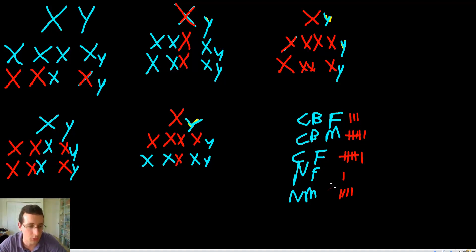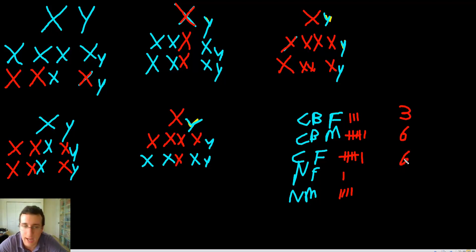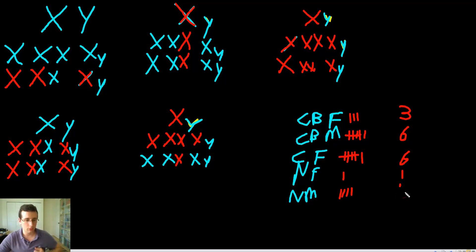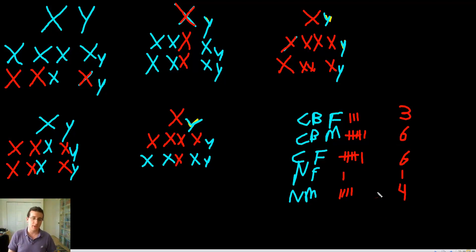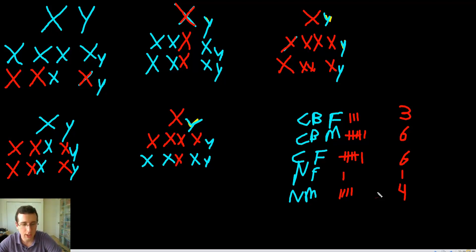On our last cross we get another colorblind female and two more colorblind males. So the totals are: three colorblind females, six colorblind males — twice as many. Six carrier females — males cannot be carriers. One normal female in the whole setup, and four normal males. That shows how much more common it is to have a carrier female than a female that actually has the disease. You're almost twice more likely to have the disease than not have it if you're a male across all of these crosses.